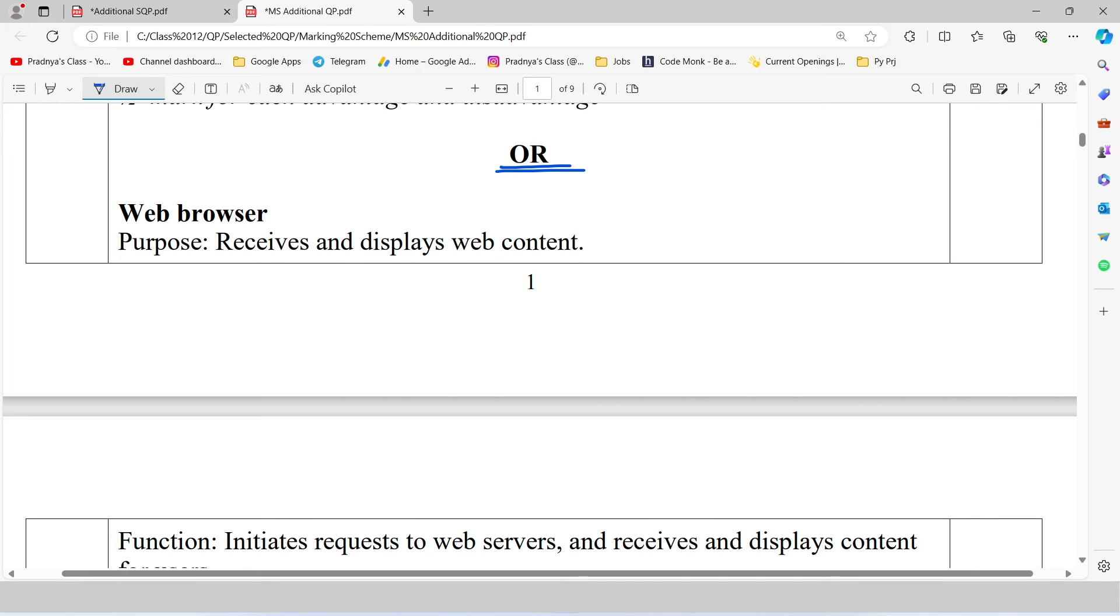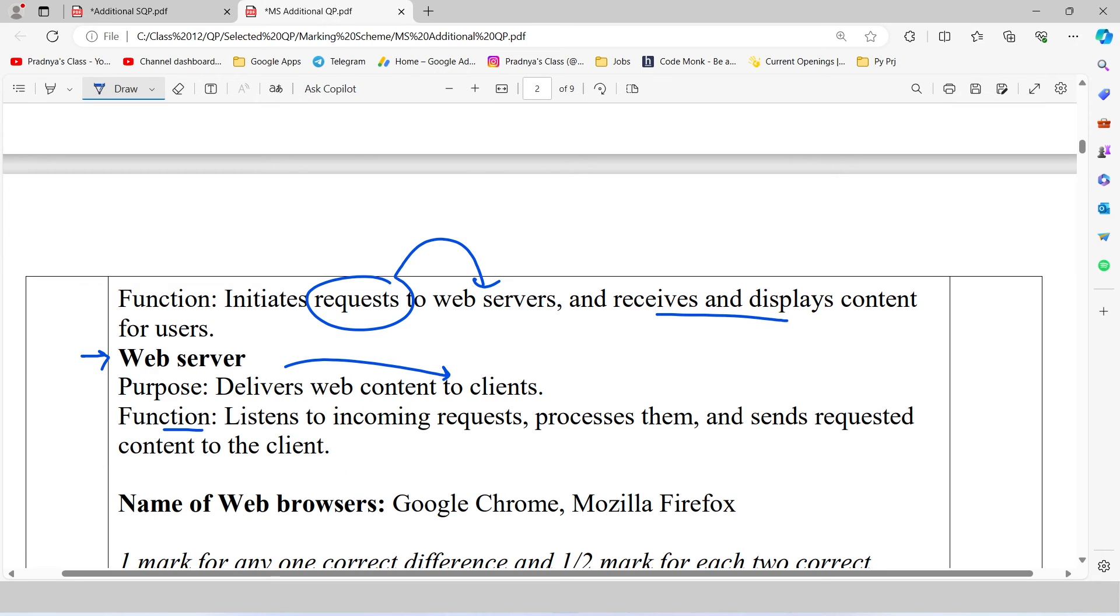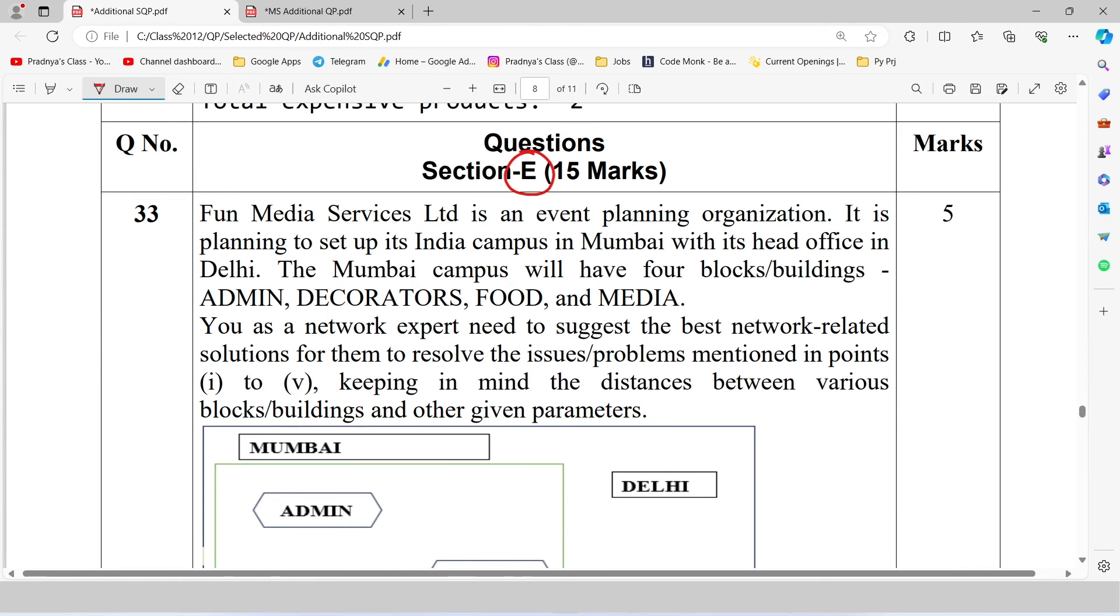For this type of communication you can think of telephone line. Now look at the answer of the second question. Difference between web browser and web server. Here we follow client server technology. Client will be browser. So it receives the web content. You know what's the function of the client. It will send request to the web server. After that it will receive and display the content. Then what about web server? It delivers the content to the client. Look at the function. Server will accept the request from the client, processes it and sends back the data requested by the client. Don't forget to write the name of the browser. Microsoft Edge, Google Chrome or Mozilla Firefox.